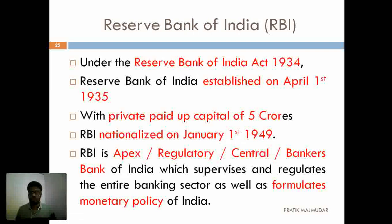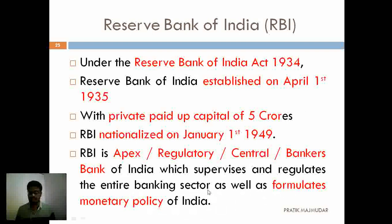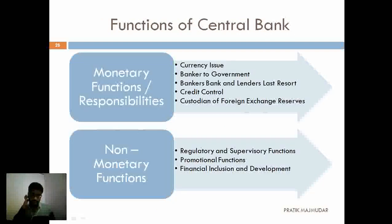So to summarize: RBI was established in 1935 and nationalized on 1st January 1949. Its different names are apex bank, regulatory bank, central bank, and bankers' bank. Their main function is to supervise and regulate the entire banking sector and to formulate monetary policy. The functions of the central bank are divided into two parts: monetary functions and non-monetary functions.